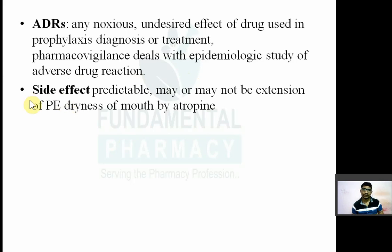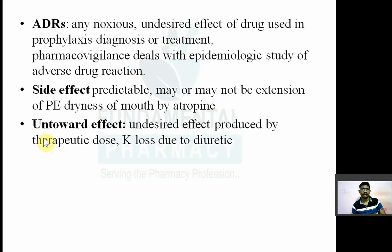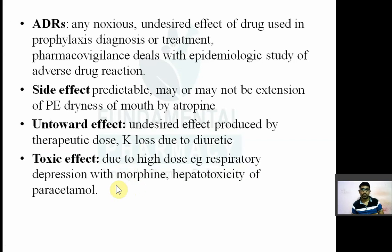Side effects are normally predictable. If you increase the dose of a drug, that is predictable. Side effects are predictable and may or may not be an extension of the pharmacological effect. For example, dryness of mouth caused by atropine. Unwanted effects are undesired effects produced by a therapeutic dose of a drug. For example, if you are on diuretics, diuretics will increase urine formation, and along with urine, it will excrete sodium and other ions. Potassium loss due to diuretics is known as an unwanted effect.